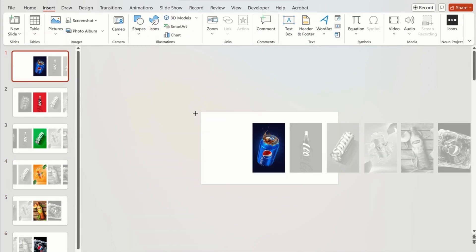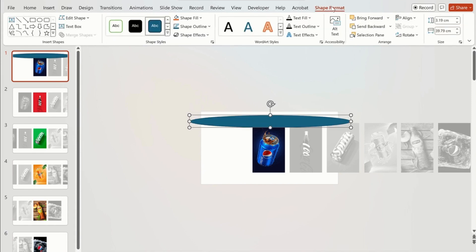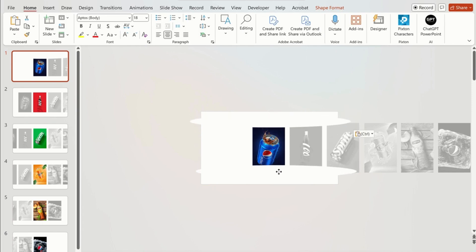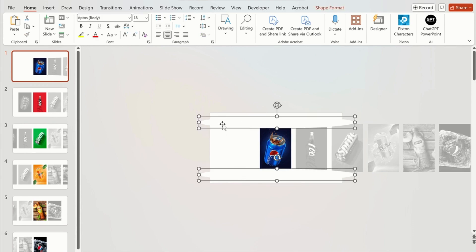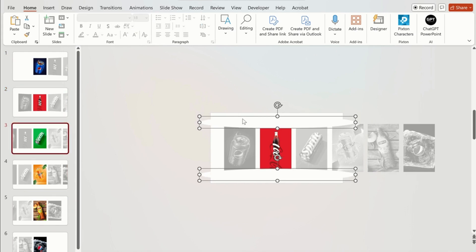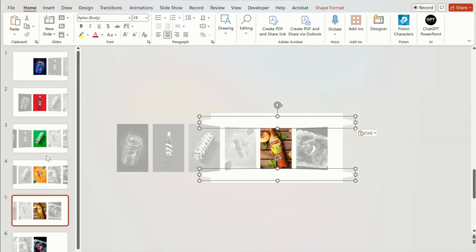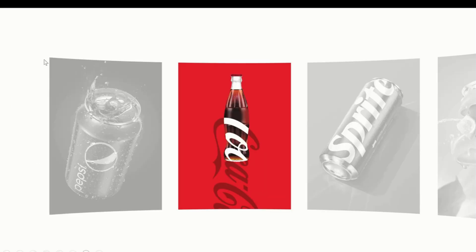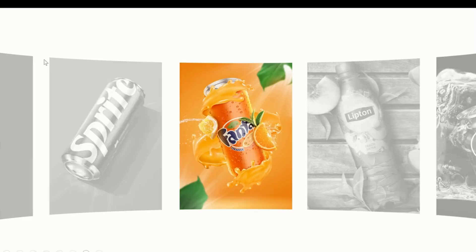Now insert an ellipse shape on top of the picture as shown. Go to Shape Format, change its color to white, and select No Outline. Now duplicate the shape and apply it below the picture. Select both shapes using the Shift key, copy the shapes, and paste them on all our slides. Then click on Slide View to see how the carousel effect is looking — it's looking perfect.